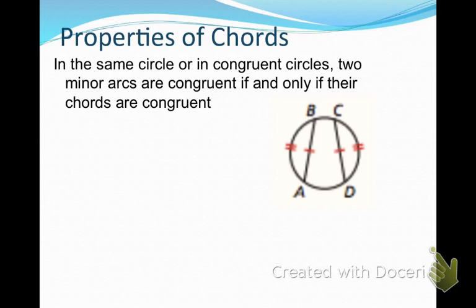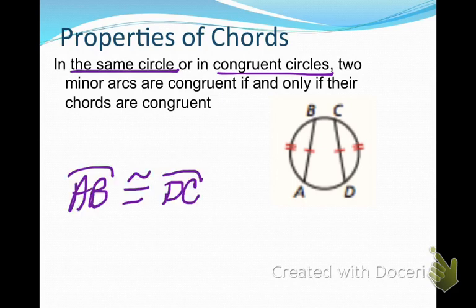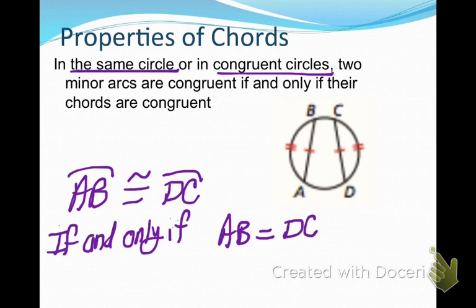There are some properties — three or four — that you need to write down and memorize, because we're going to use them to solve problems. The first one says: in the same circle or in congruent circles — and that's very important — two minor arcs are congruent if and only if their chords are congruent. So in this diagram, arc AB is congruent to arc CD if and only if chord AB is congruent to chord CD.